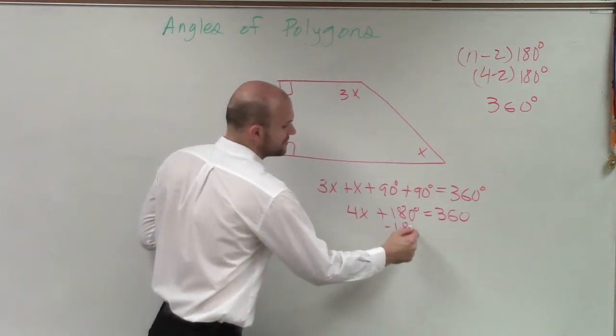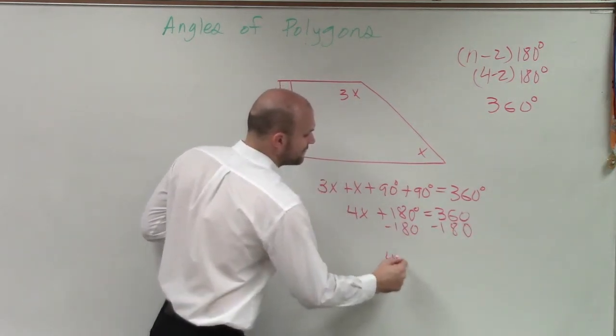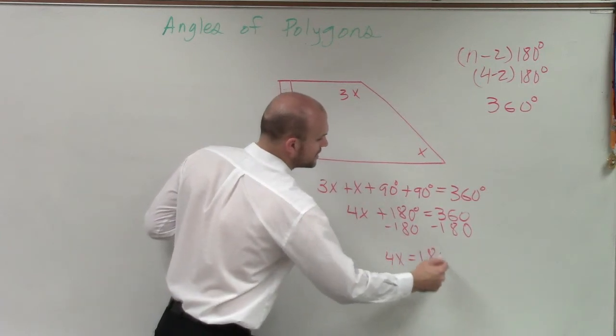Now, I subtract 180. And therefore, I have 4x equals 180 degrees.